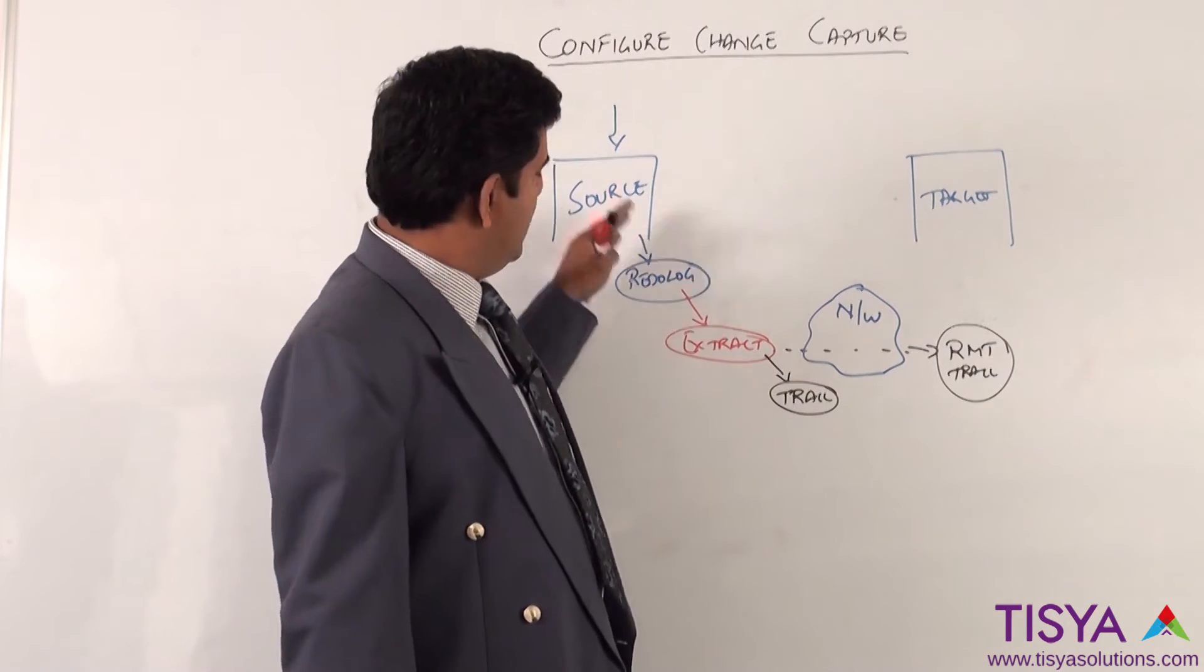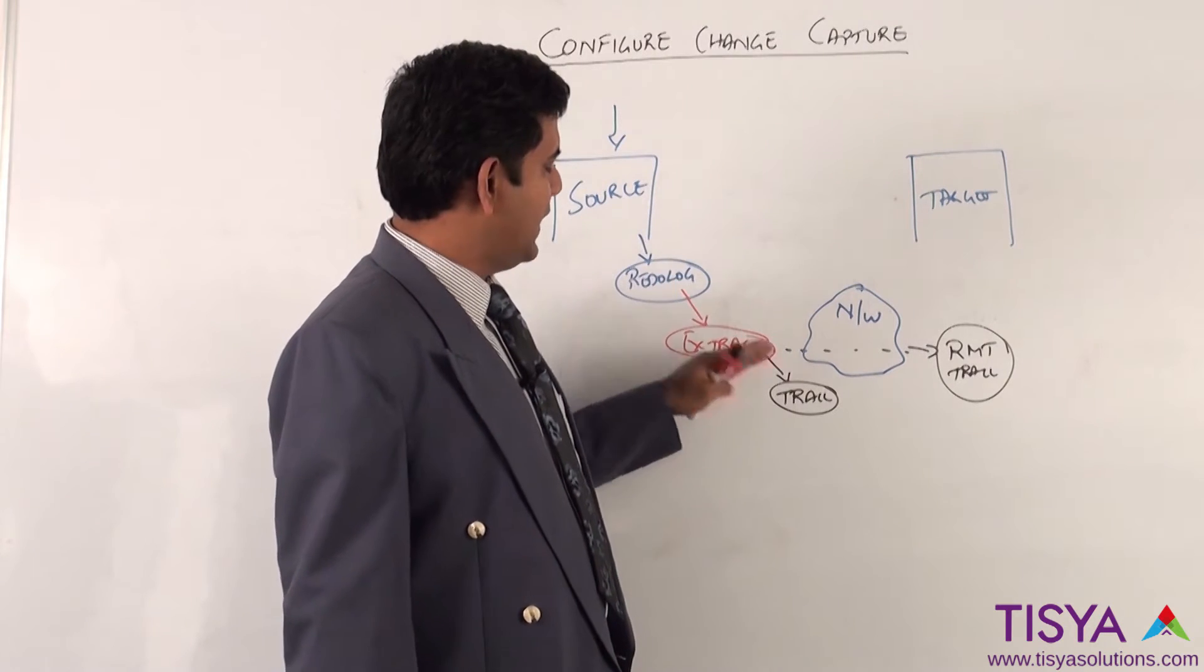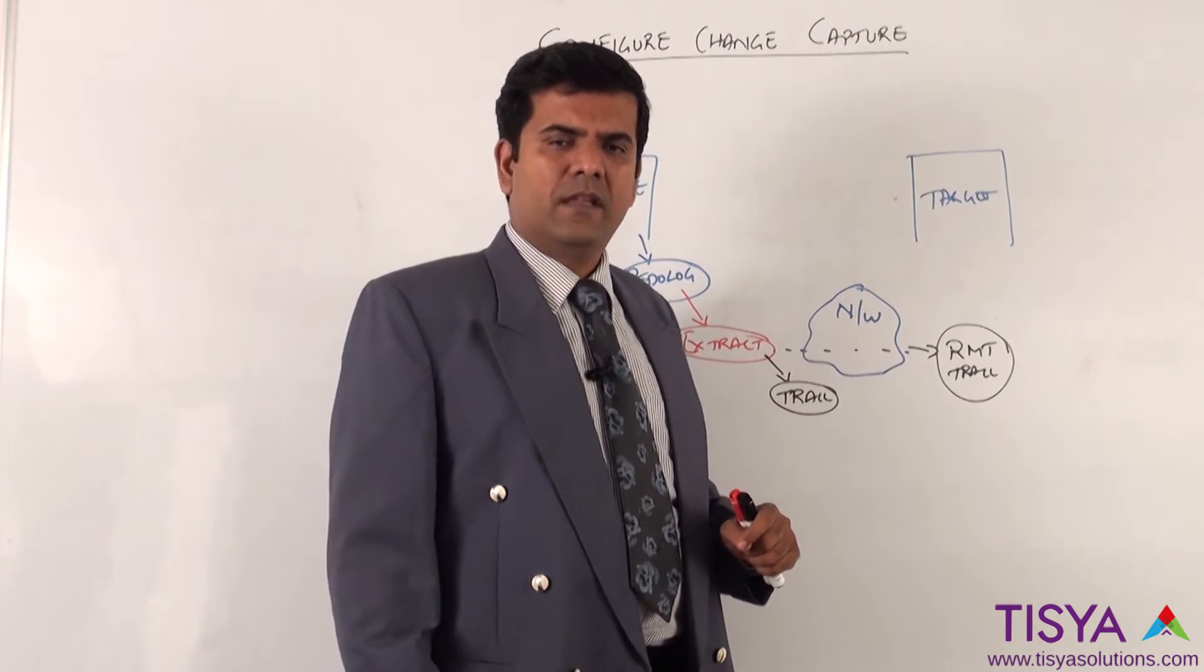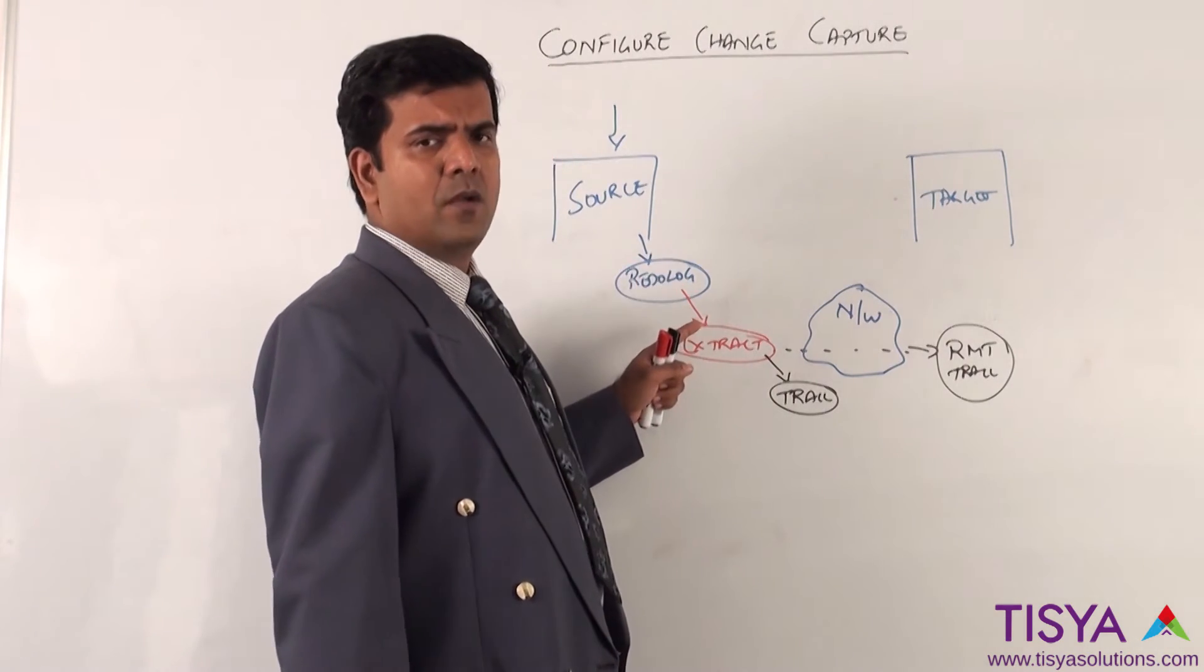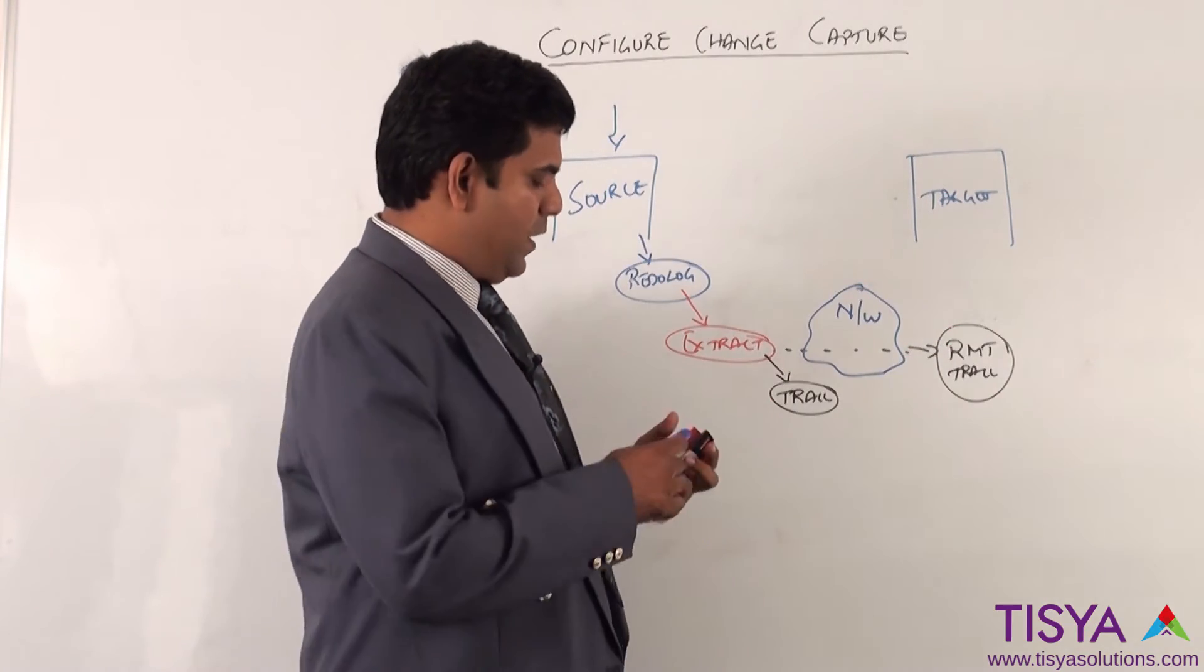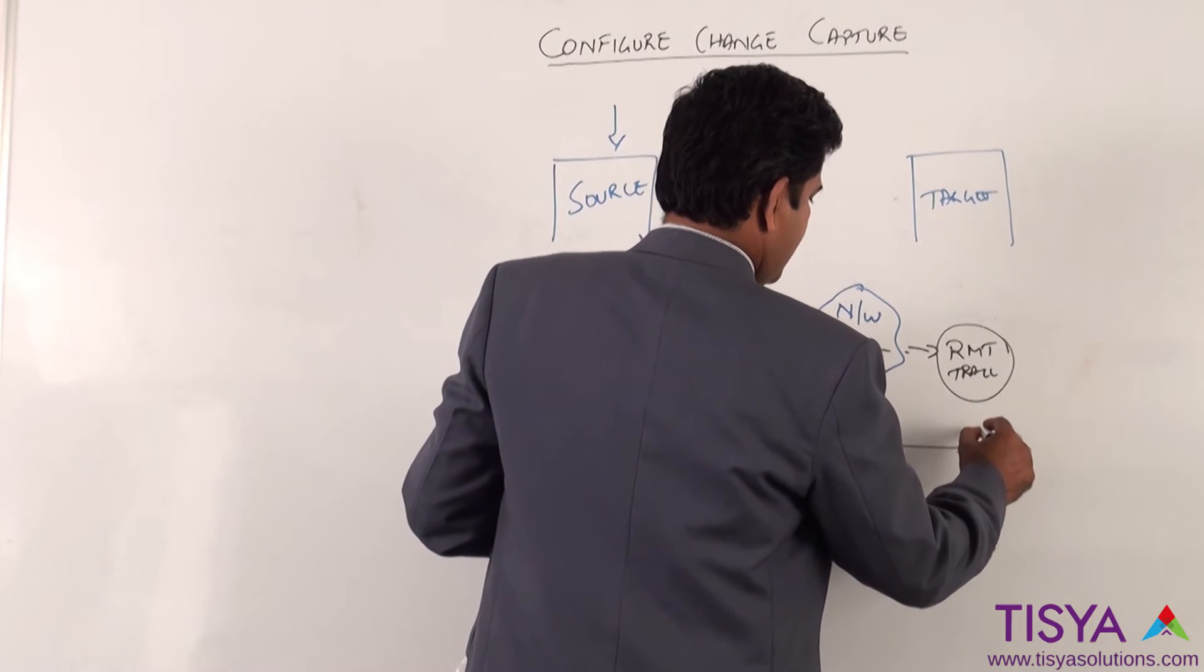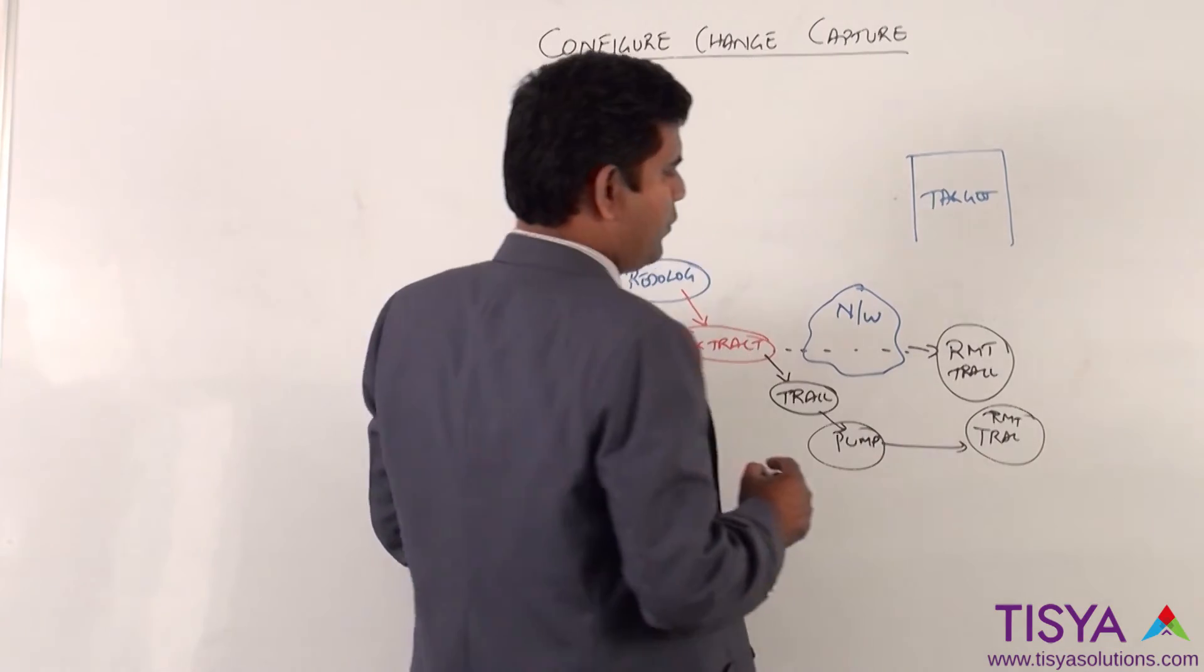If the extract stops, transactions on the source will continue to happen, so there would be a disconnect between what extract has processed and the status of the OLTP. So the recommended approach is not to use a remote trail, instead write to a local trail so that the extract can continue to run irrespective of what is happening in the target, and we can use a pump process.